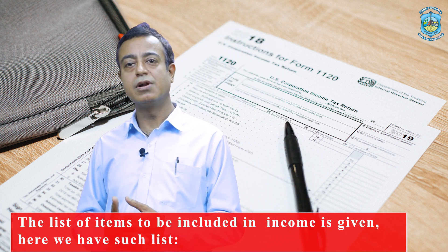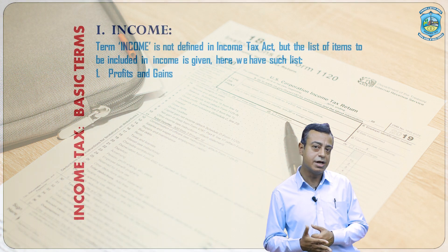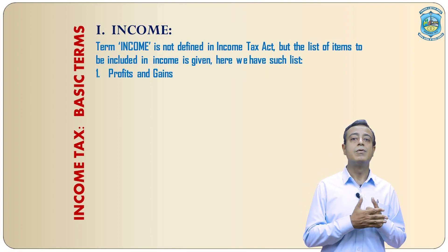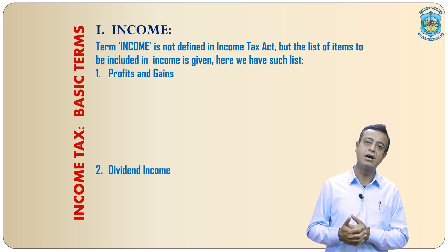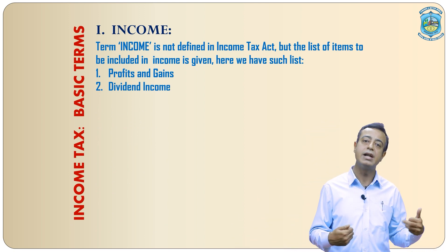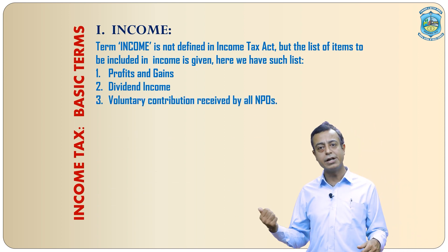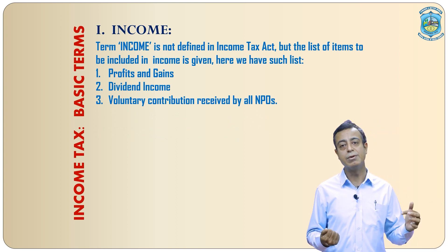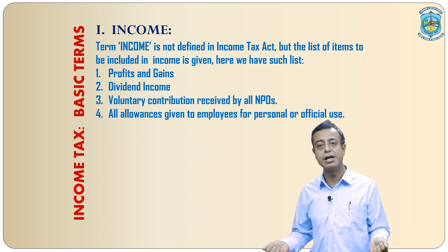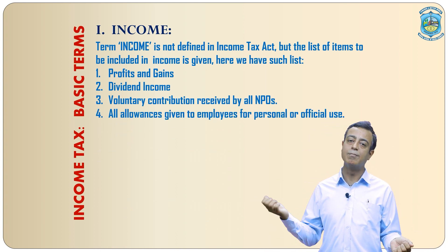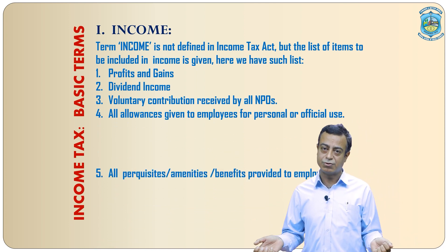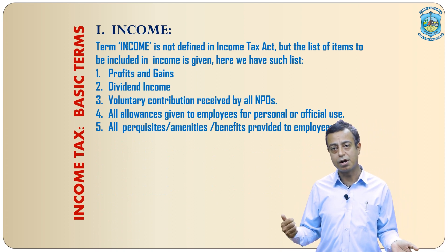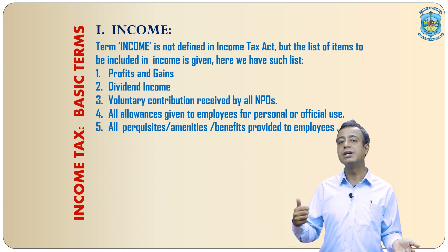We have a brief list of the items of income. First, income from business and profession in the form of profits and gains. Second, dividend income from cooperative societies, companies, foreign companies and Indian companies. Third, voluntary contributions received by all non-profit organizations such as research institutions, charitable organizations, charitable trusts, etc. Fourth, all allowances received by an employee for his personal or official use. Fifth, all perks, facilities, and amenities received by an employee from his employer to meet his personal expenses or official duty.